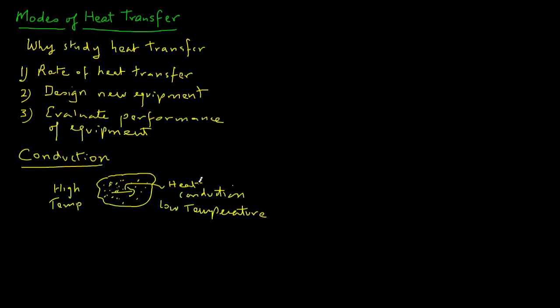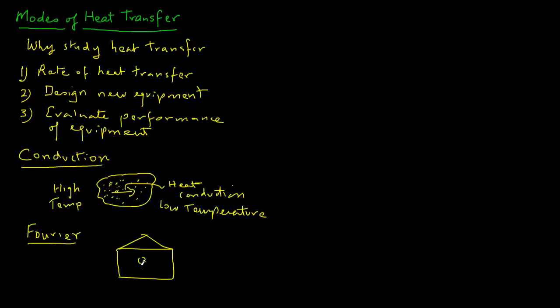So how do we mathematically describe conduction? This was done by a person by the name of Joseph Fourier. To understand his reasoning, let's just look around. If you are sitting in a room, let's see how heat is transferring through the wall. Let's try to list items that will affect the rate of heat transfer from the inside of the room to the outside.